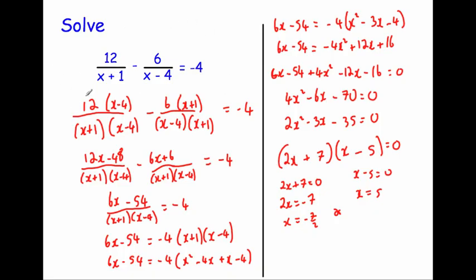So we've solved the equation involving algebraic fractions. The key method is: times the numerator and denominator of the first fraction by the denominator of the other, and vice versa. That gives a common denominator. Generally you'll be left with a quadratic and get two solutions. Let's look at another example.